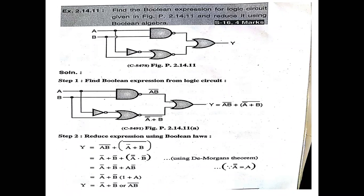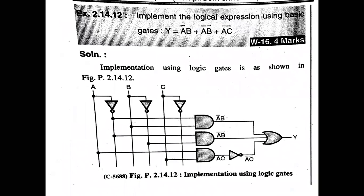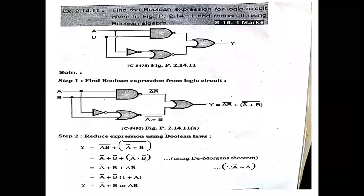Good morning. In the last lecture, we studied some examples of implementing logical expressions — we minimized them and designed the logical diagram accordingly. Now the same example is mentioned here: find the Boolean expression for the logic circuit given in the figure and reduce it using Boolean algebra. Here the logical diagram is shared on screen, where a NAND gate and a NOR gate are used, with a NOT connected, and output given to an OR gate.